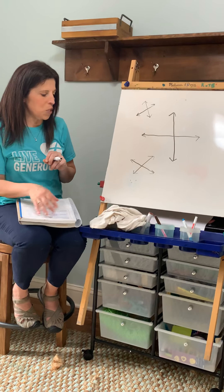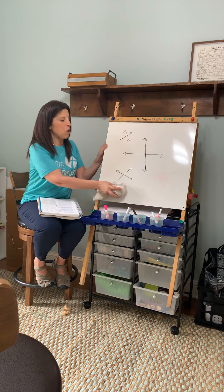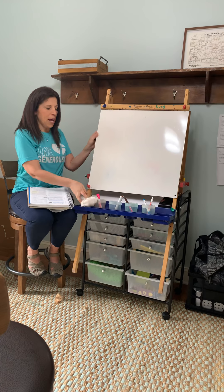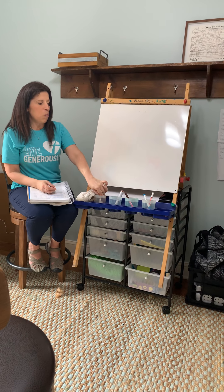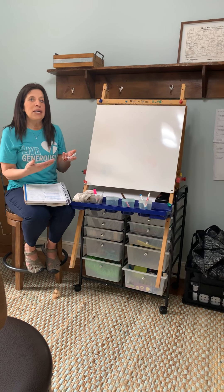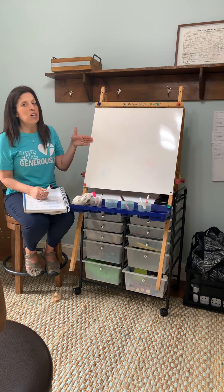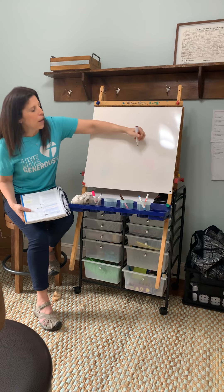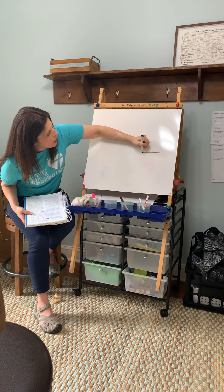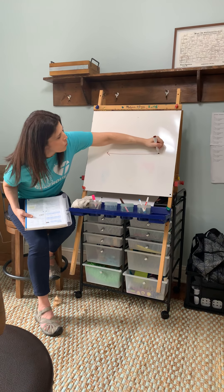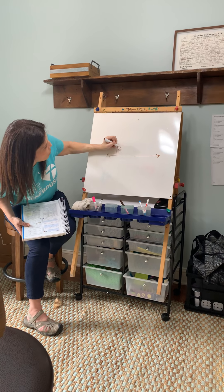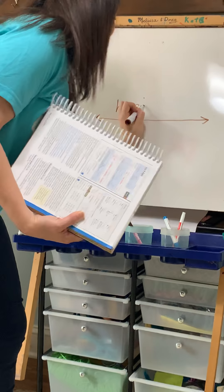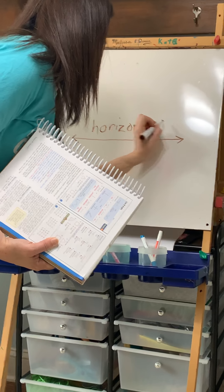Two other types of lines we want to look at — which we've already covered in class — are horizontal and vertical, and we'll do a quick reminder today. When we see a horizontal line, it's a reminder of the horizon. If we think about looking at the sunset, a horizontal line goes across this way.